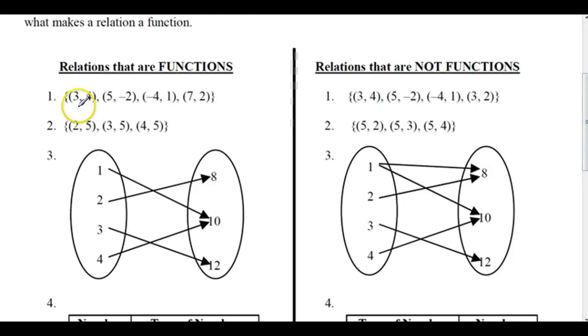So relations that are functions. {(3, 4), (5, -2), (-4, 1), (7, 2)} is a function, and {(3, 2)}. So it's got to be something about this (7, 2) and (3, 2). Those are the only differences.